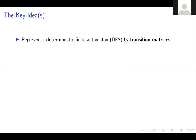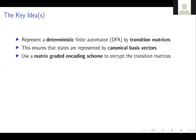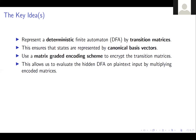Let me tell you the key ideas of the paper. First, we want to represent a deterministic finite automaton — a DFA — by its transition matrices. We restrict to DFAs because for a DFA the states can be represented by canonical basis vectors: a vector of length r with a single one entry and all other entries zero. We then use a matrix encoding scheme to encrypt the transition matrices, allowing us to evaluate the hidden DFA on a plaintext input by simply multiplying the encoded matrices.